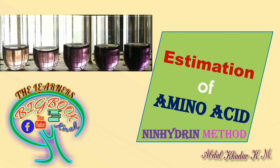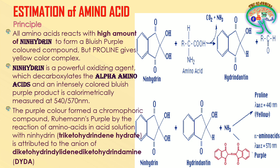Today we are going to discuss the estimation of amino acid by the ninhydrin method. We will skip the general introduction on amino acids — essential vs non-essential, solubility in water or alcohol — and go directly into the principle, followed by the reagents required, the procedure and protocol, and finally the calculation and result.